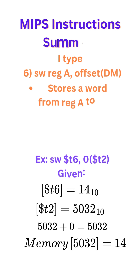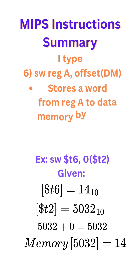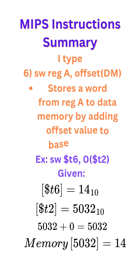Next, I-type store word register A, offset (base register). This instruction stores a word from register A to data memory by adding the offset value to the base register.